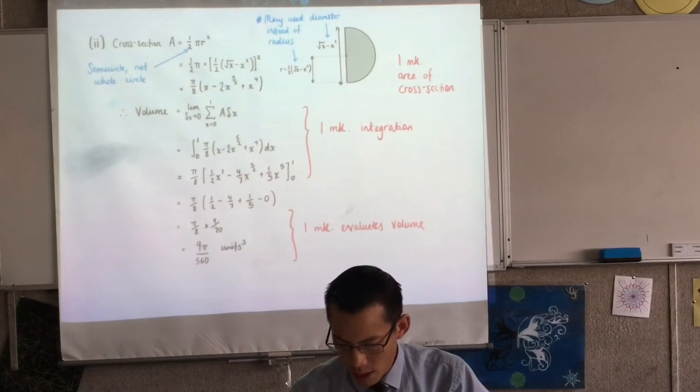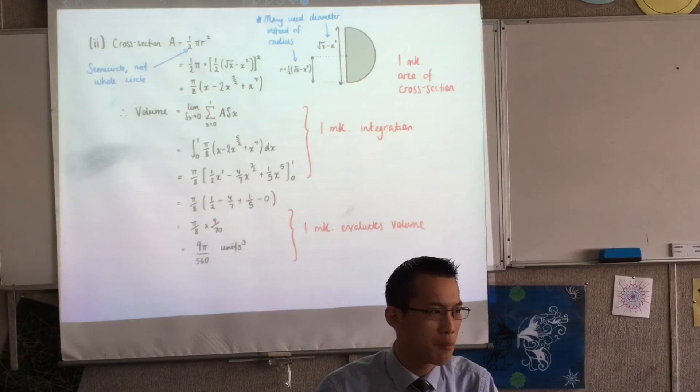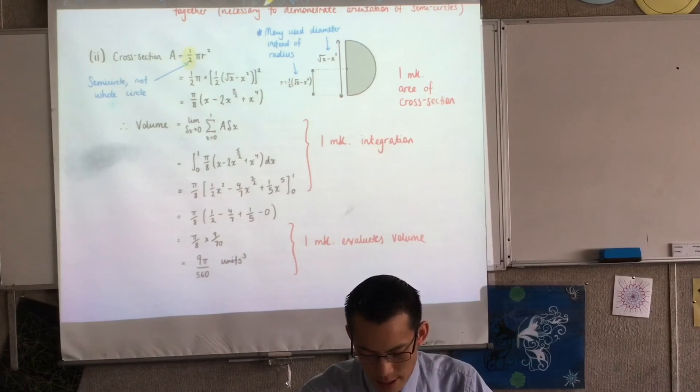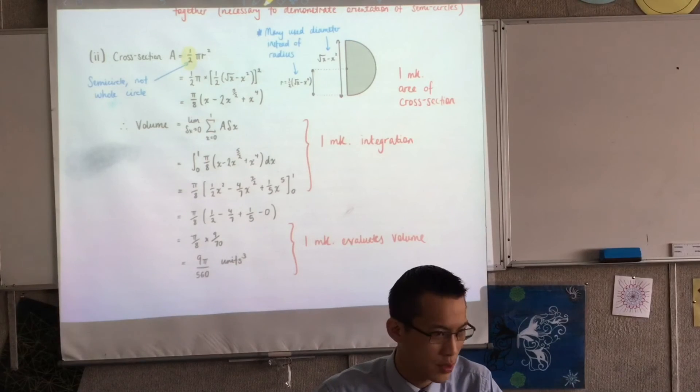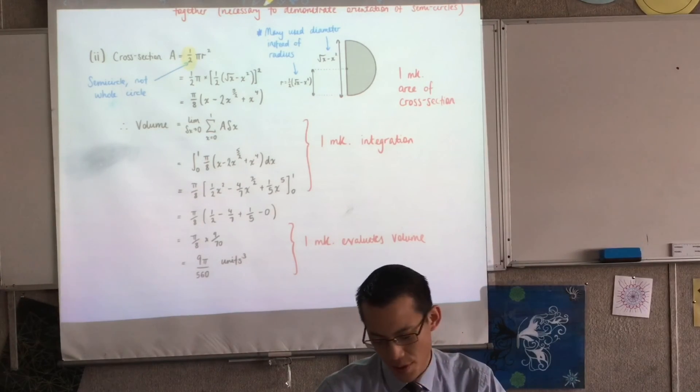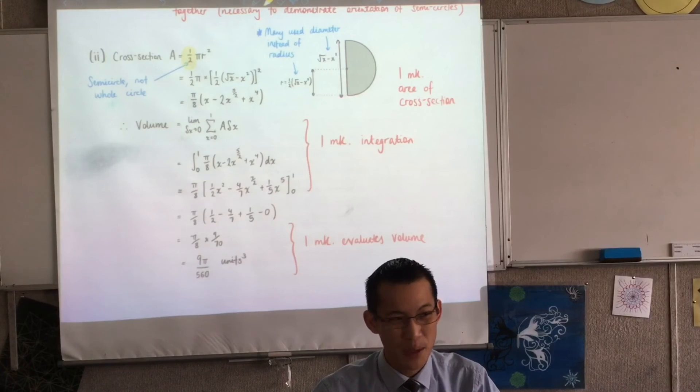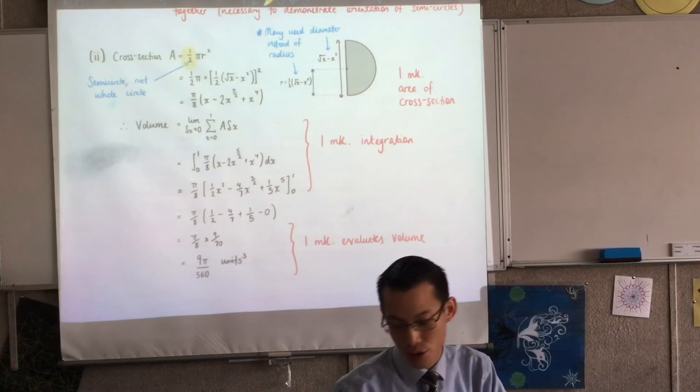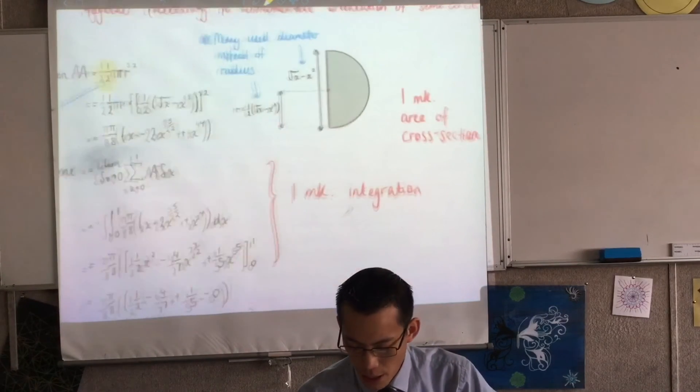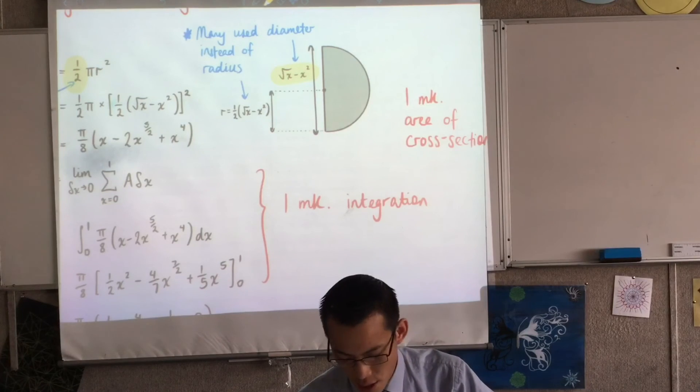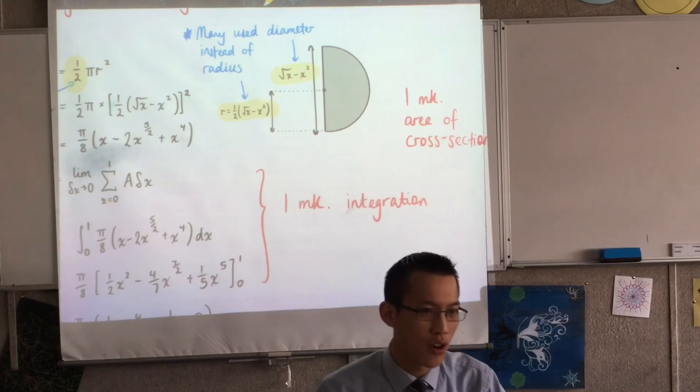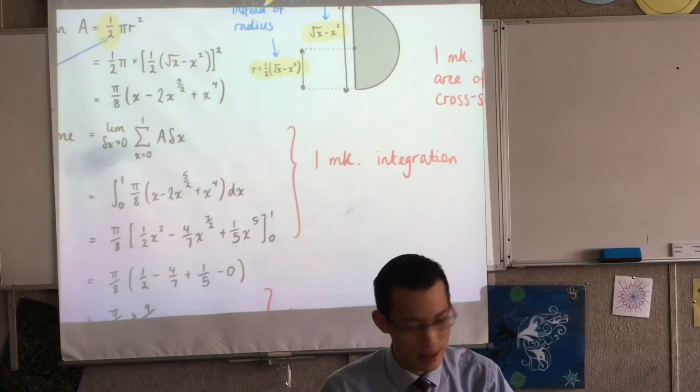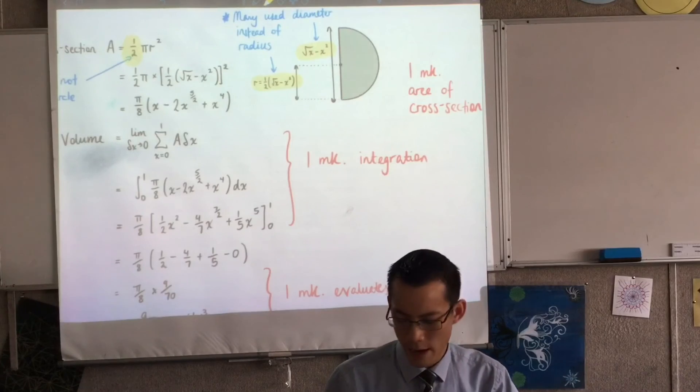All right. Now, part two, we unfortunately just got hit by a series of minor errors. Let's have a look. The first minor error was people didn't have a half there. They just went to pi r squared. So you would have got 9pi on 280 because you've gone all the way around instead of the semicircle. The second common error, and I made this error too when I was first writing this, and then I was like, wait, what have I done? Is using the diameter instead of the radius. That was a common error because we're so used to using the diameter and we forget to halve it and think, oh, wait, my formula for a semicircle's area requires the radius.